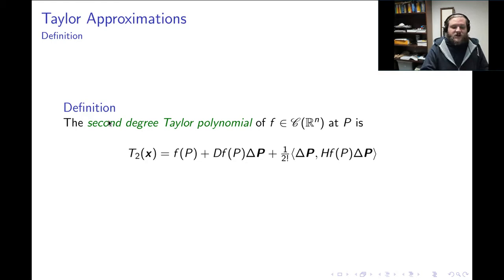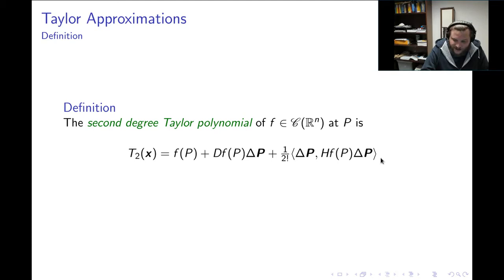So what can we use this information for? We can use this to construct a second-degree Taylor polynomial of a scalar field. This would be T₂ of x equals f of the original point p, plus the Jacobian derivative of f evaluated at the original point times the change vector delta p, plus 1 over 2 factorial, and this last term is the inner product of the change vector with the Hessian derivative evaluated at p times the change vector.